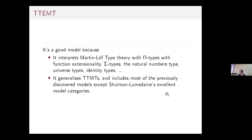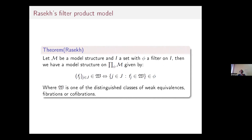This generalizes the type-theoretic model topos and includes most of the previous models, except for Shulman–Lumsdaine's excellent model categories which are combinatorial. Here is the model structure: if M is a model structure admitting finite limits and co-limits, and you have a set and a filter, then the filter product also admits a model structure. The weak equivalences W and the fibrations are among the distinguished classes.